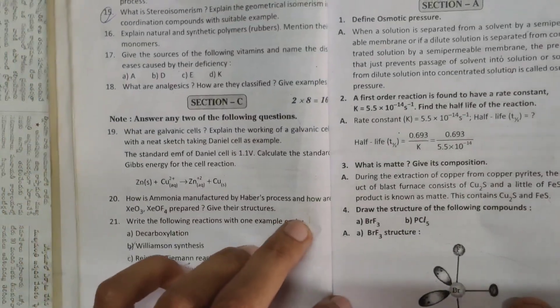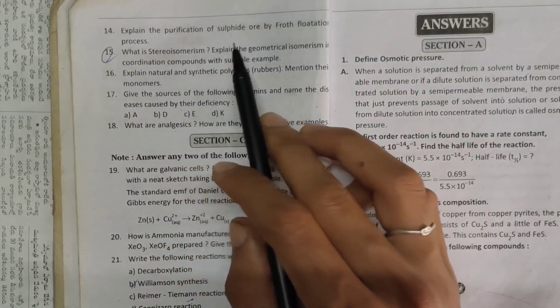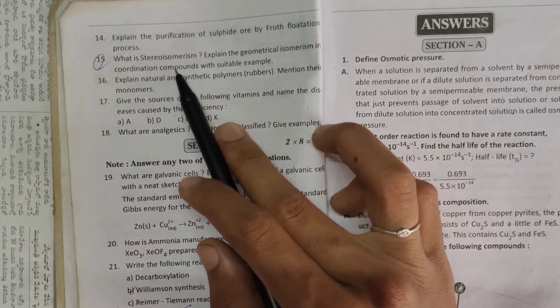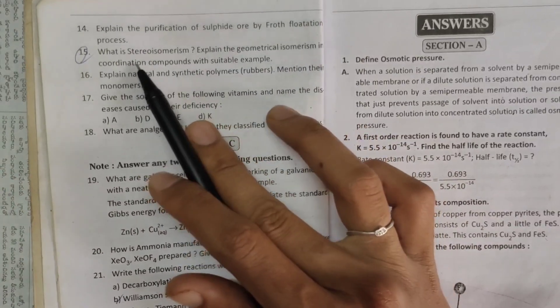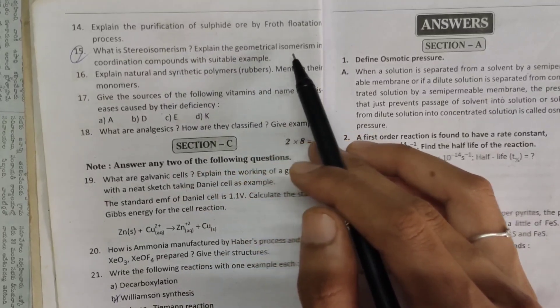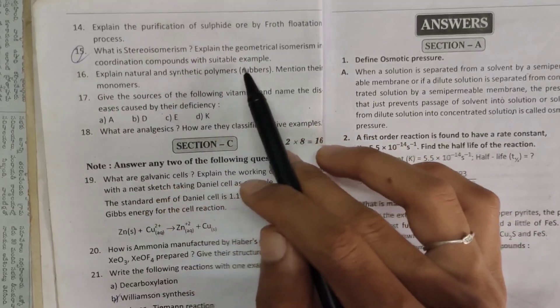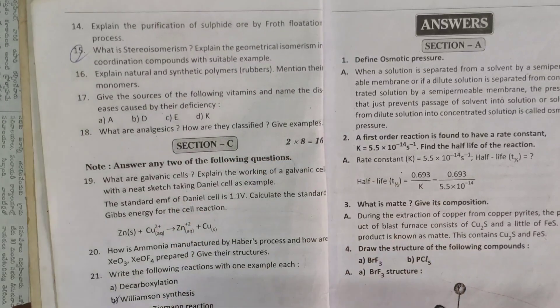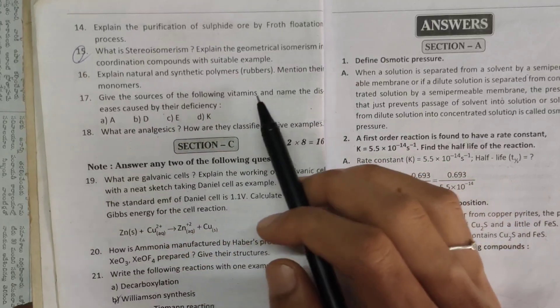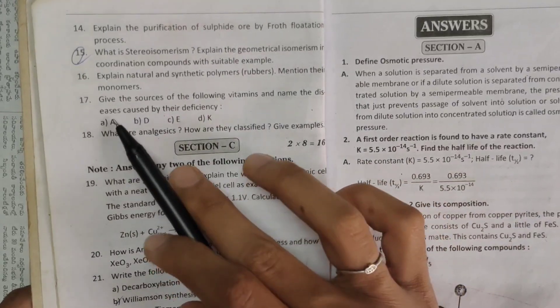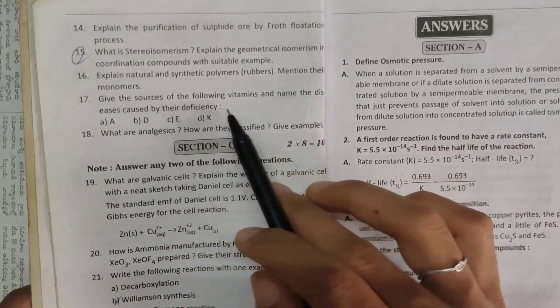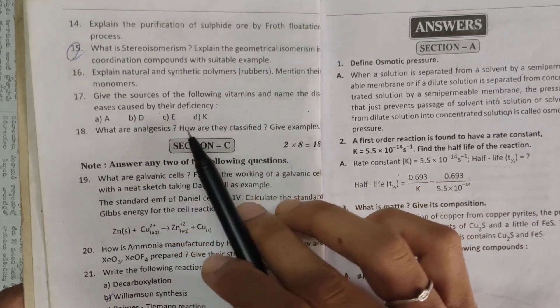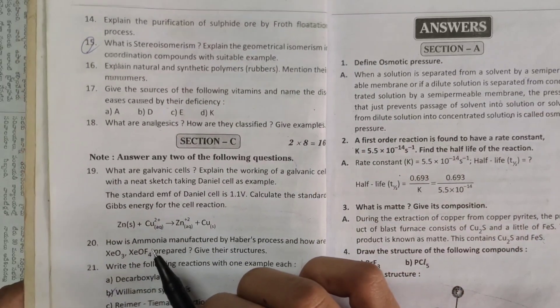And 14th one, explain the purification of sulphide ore by froth flotation process. And 15th one, what is stereoisomerism, explain the geometrical isomerism in coordination compounds with suitable example. And 16th one, explain natural and synthetic polymers, mention their monomers. And next 17th one, give the sources of the following vitamins and name the diseases caused by their deficiency: vitamin A, vitamin D, vitamin E, and vitamin K.